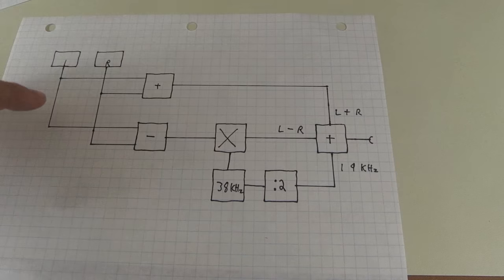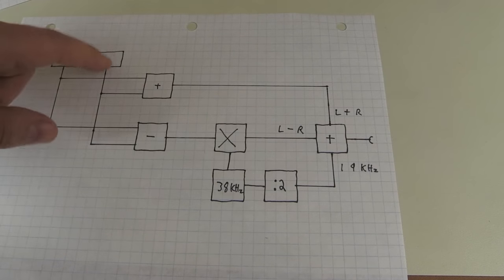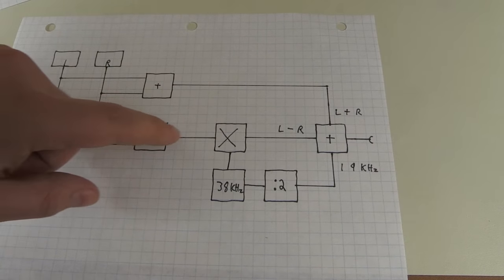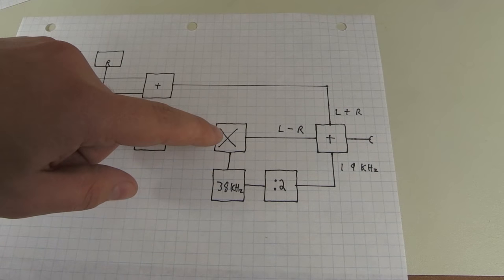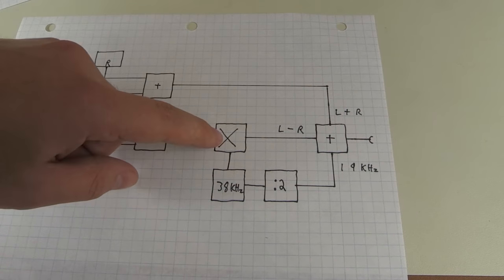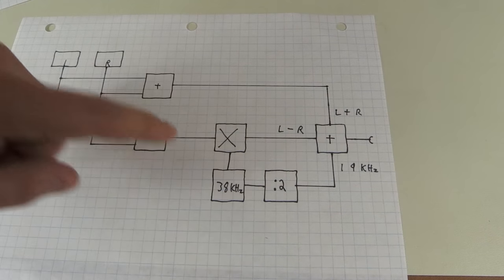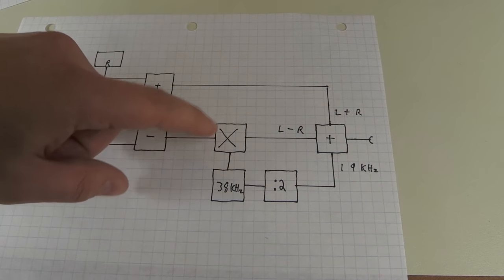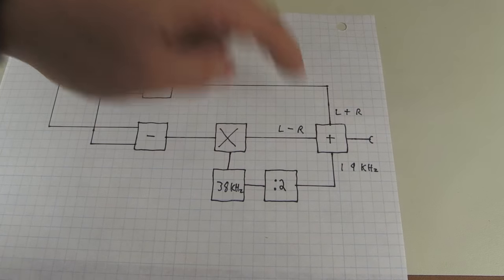Then the second you want to generate is the different signal. Left minus right. And this goes over here to a multiplier, a modulator with a 38 kilohertz carrier to create your double sideband left minus right signal.